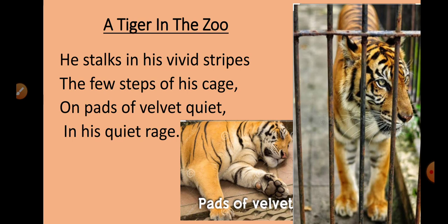He walks in quiet rage. Rage means a lot of anger. He has to suppress the rage because he is in the cage, locked behind bars — he can do nothing about the anger that he feels. That is why the poet has used these two opposite words together: quiet and rage.